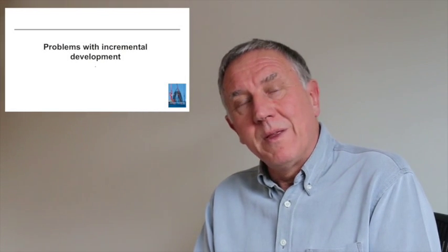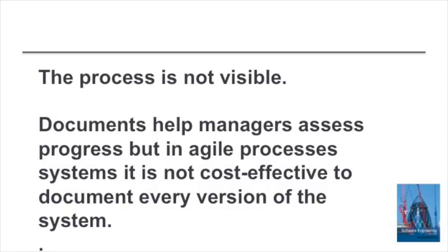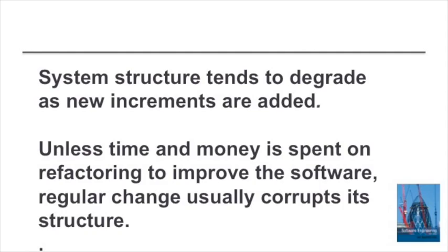The problem with Agile is the lack of visibility. Because documents are avoided, it's often difficult to know how the system is actually progressing. It's also difficult to coordinate activities across different teams. Another problem is that the system structure tends to degrade as changes are made. Active work — called refactoring — has to be done to improve the system structure and avoid that degradation.